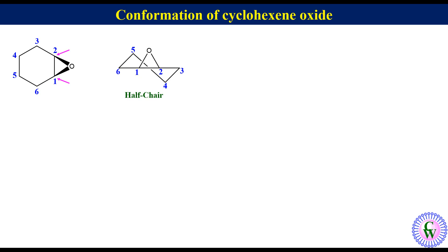Like cyclohexene, it can also undergo ring flipping to generate another half-chair conformation with the same energy, where the position of the four planar atoms remains the same while the ring atom above the plane becomes below and vice versa. These two structures have an enantiomeric relation.